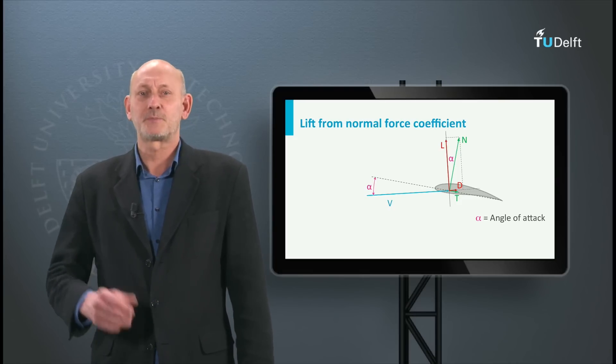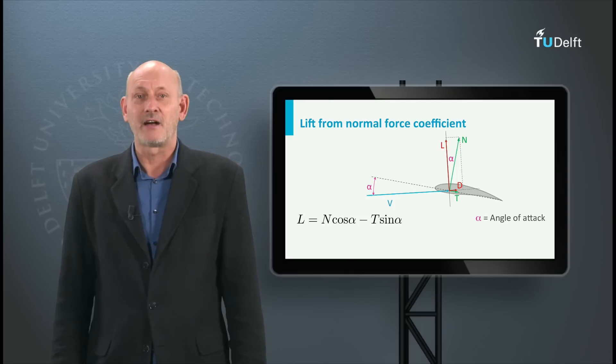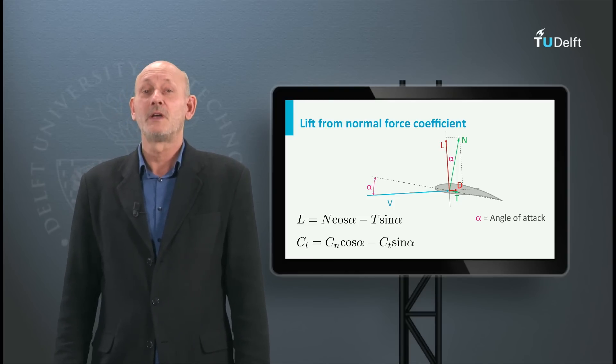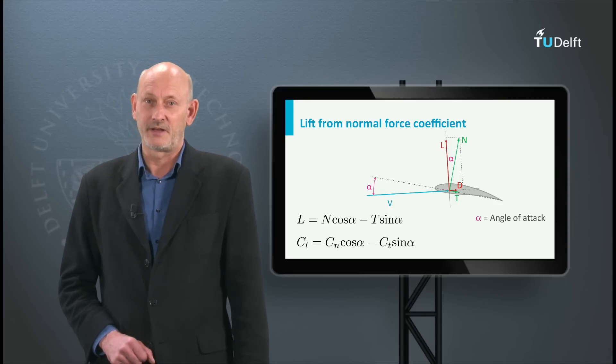And if we would express the lift force into components of n and t we find l equals n cosine alpha minus t sine alpha. This is then also true for the coefficients. So, Cl is Cn cosine alpha minus Ct sine alpha.